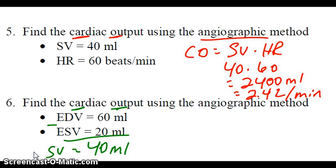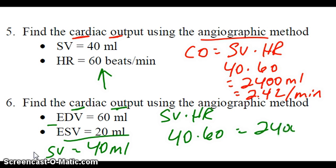From there, you can do your cardiac output of stroke volume times heart rate. We're going to assume that this is the heart rate. So 40 times 60 is 2,400 ml, which is 2.4 liters per minute.